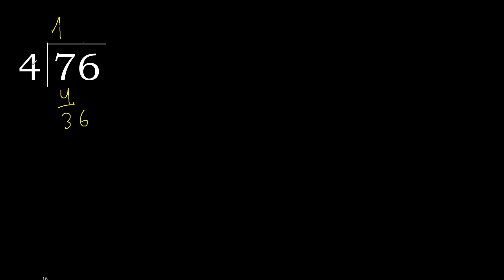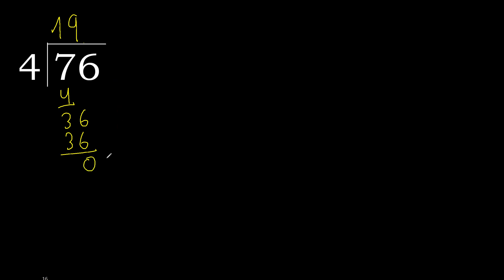36: 4 multiplied by 9 is 36, which is not greater. 36 minus 36 is 0. There is no remainder, so we finish here.